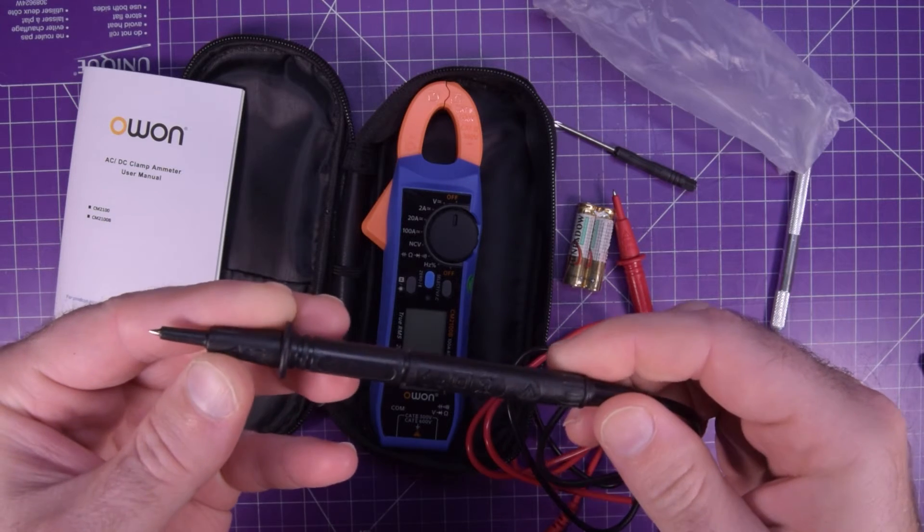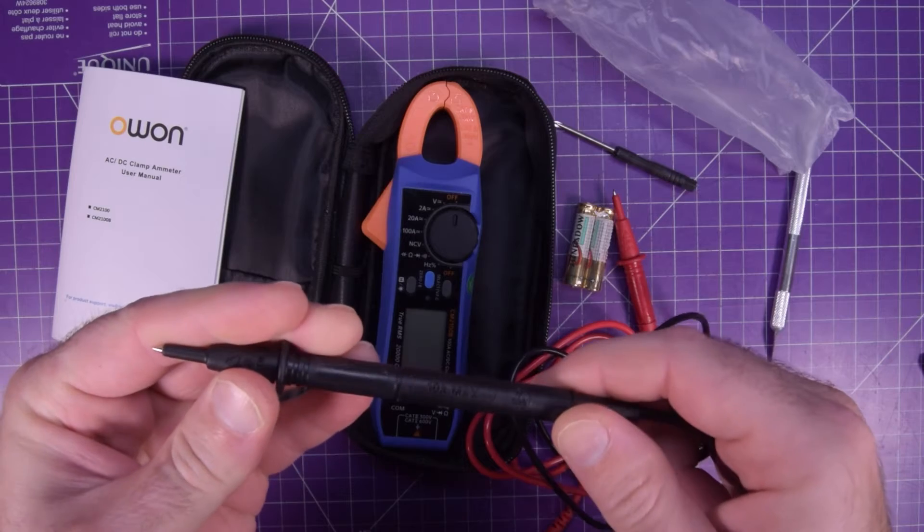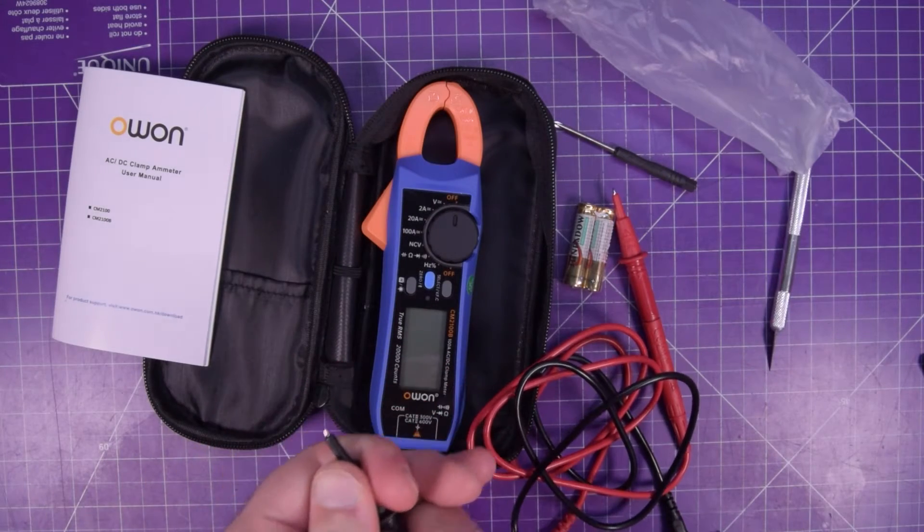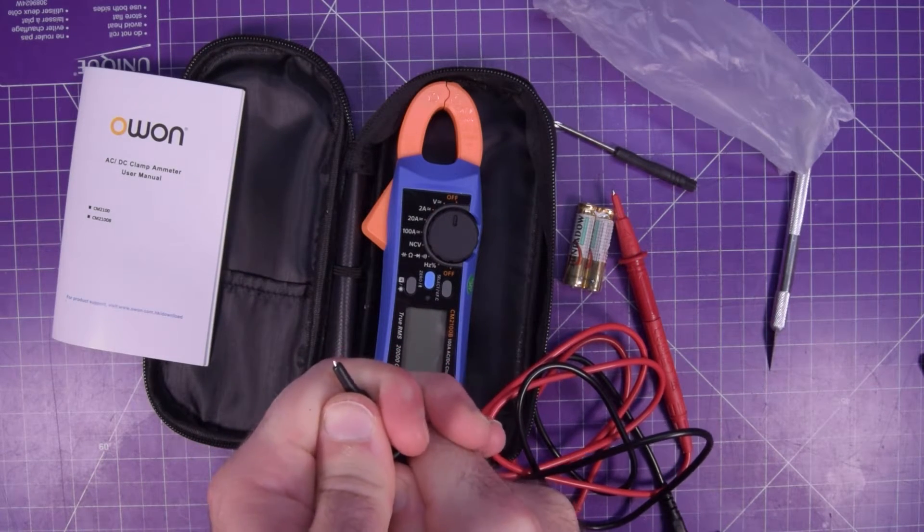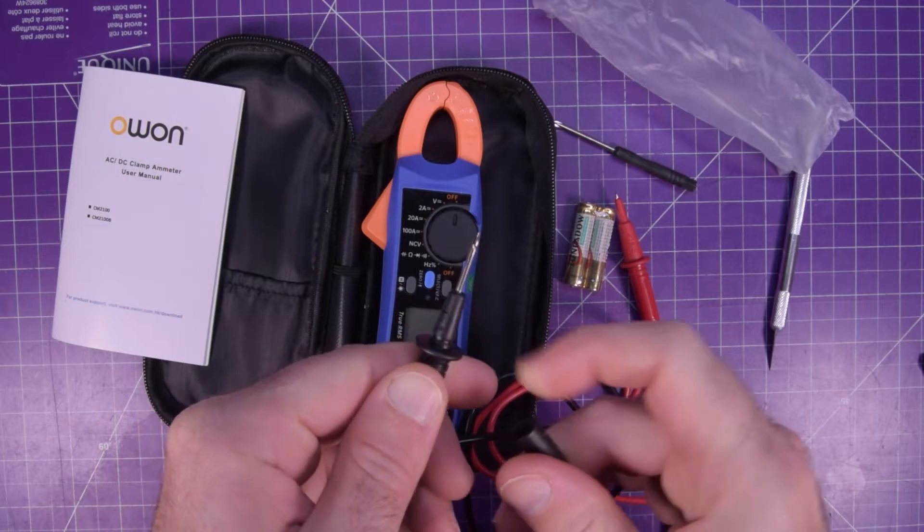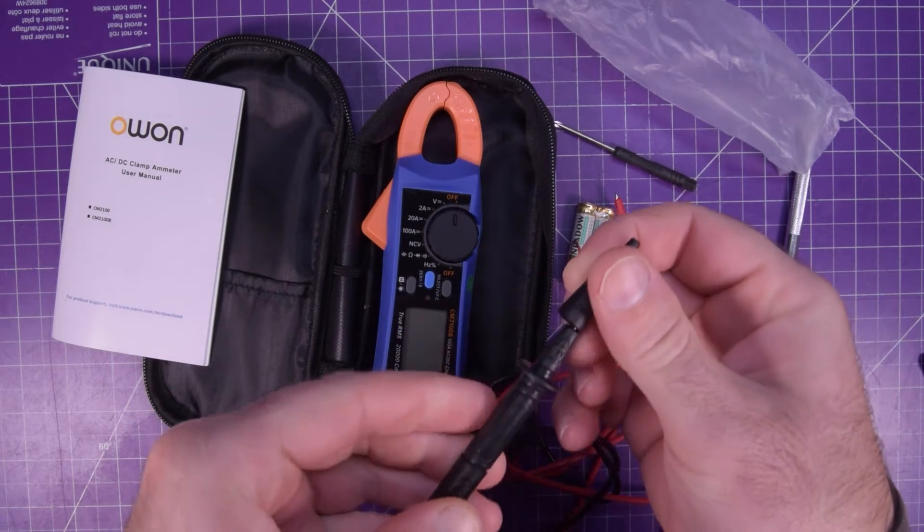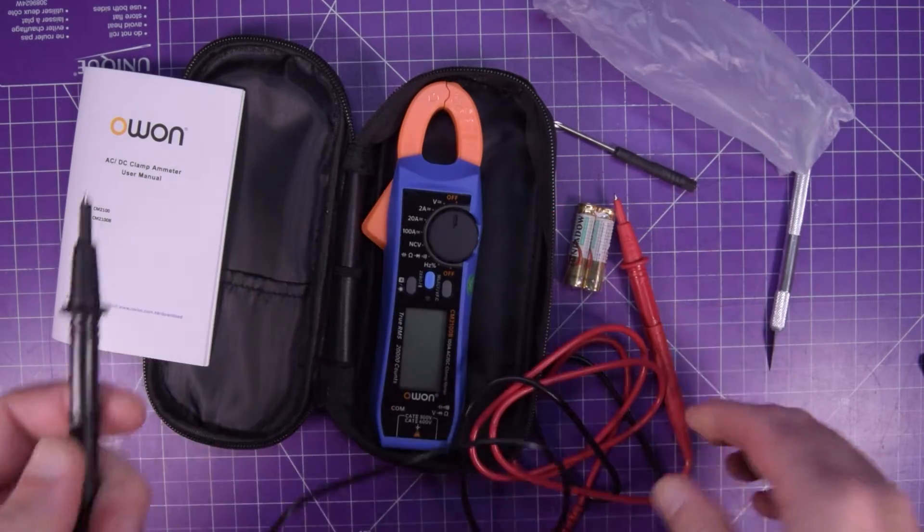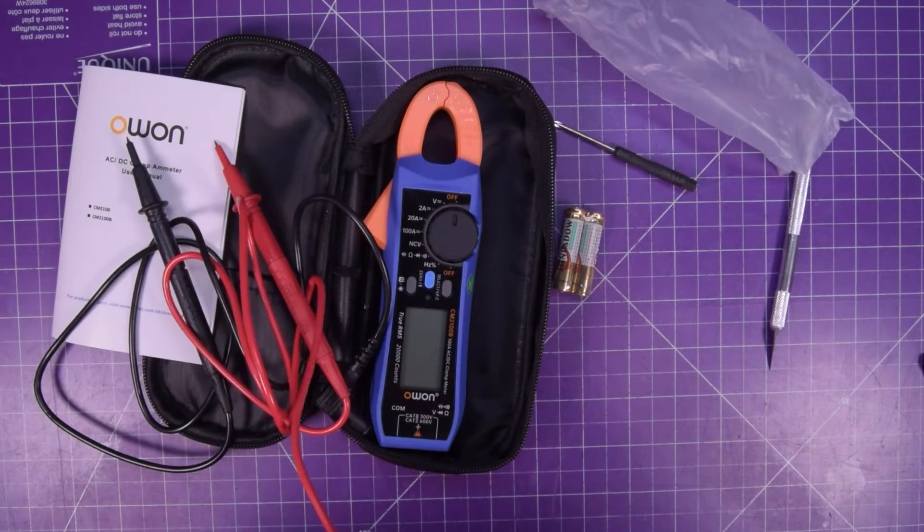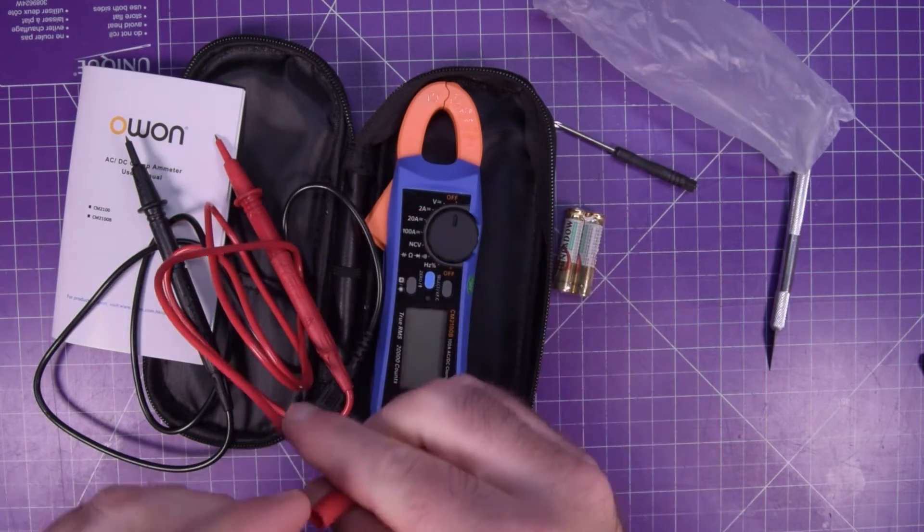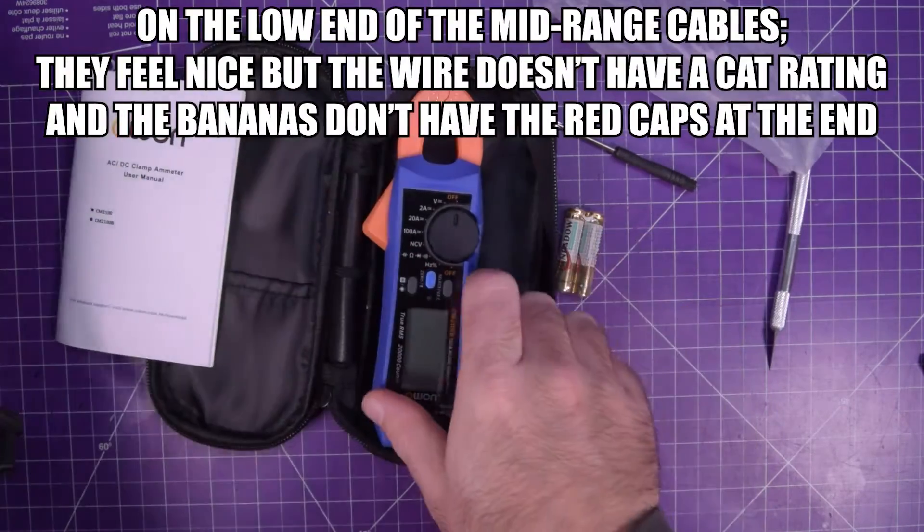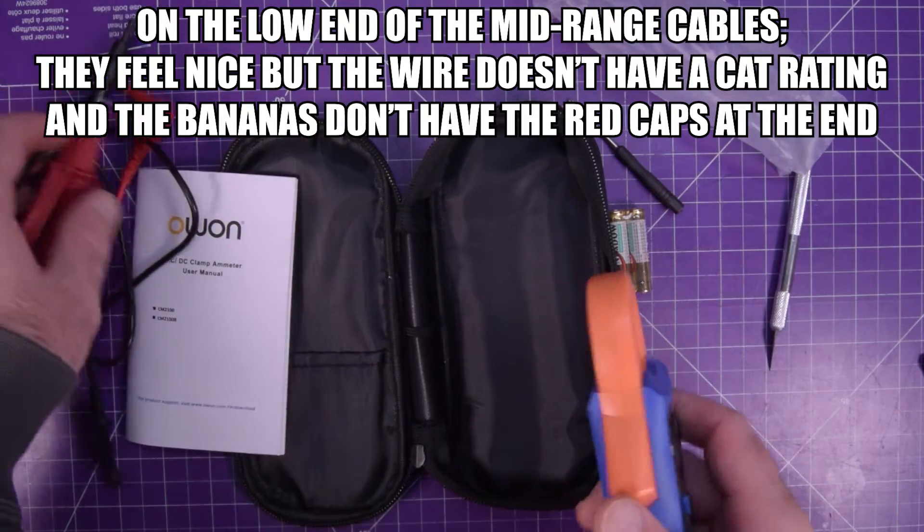It is not stamped cat anything though. For my uses it's perfectly fine, for yours it may not be. There's also these cat 4 covers, oh here we go, so cat 2, 1 kilovolt. Very soft silicon-y wires, and they don't have the covers on the end of the bananas, so I would say this is sort of low-mid-range wires here.